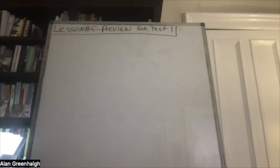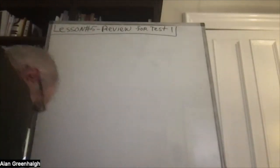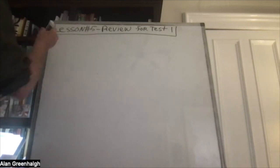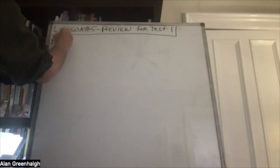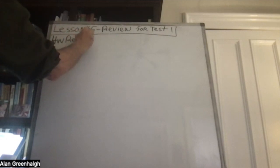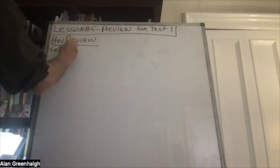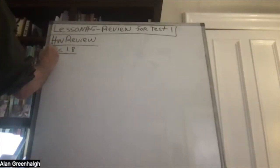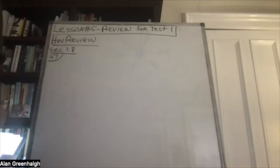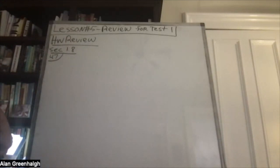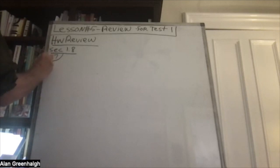This is a video going over the homework. Starting on page 47, this is Section 1.8, the homework review. I give you two relations and ask you to use the vertical line test.